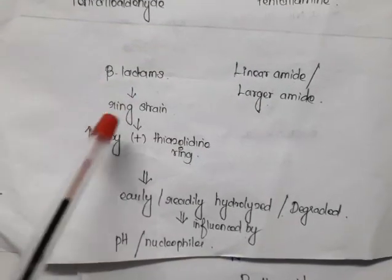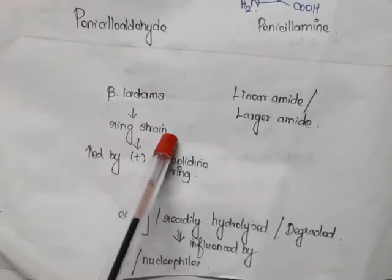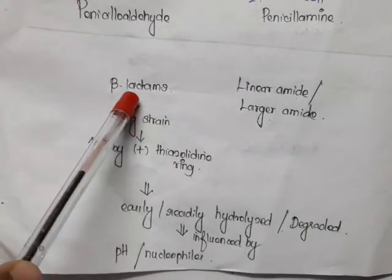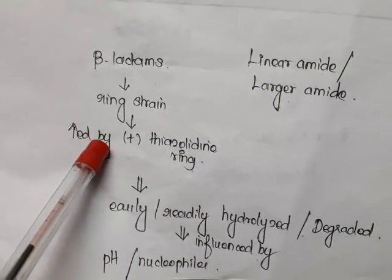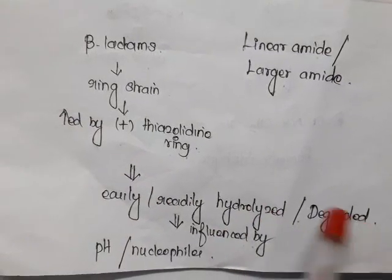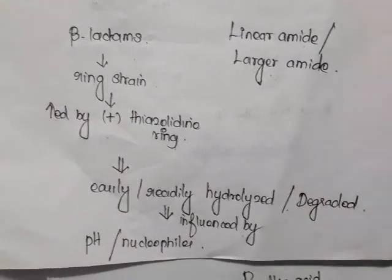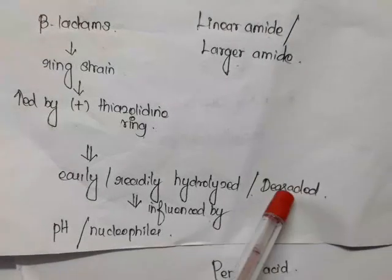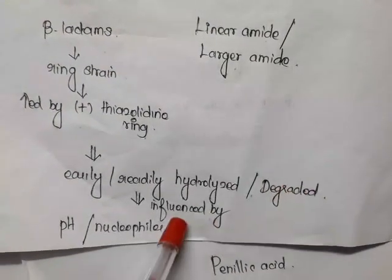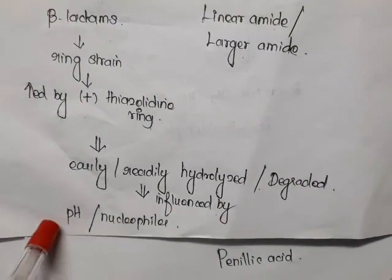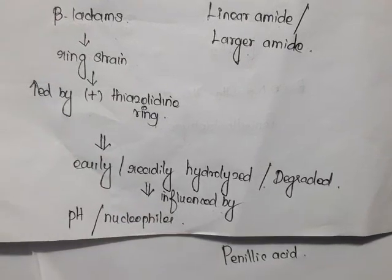Now we will see the reason for degradation. Beta-lactam is also a lactam. Compared with a linear amide or larger amide, it is easily hydrolyzed because of ring strain. Not only that, it is fused with a thiazolidine ring, which increases the ring strain further — that is why it is easily hydrolyzed or degraded. It is also influenced by pH or nucleophiles.